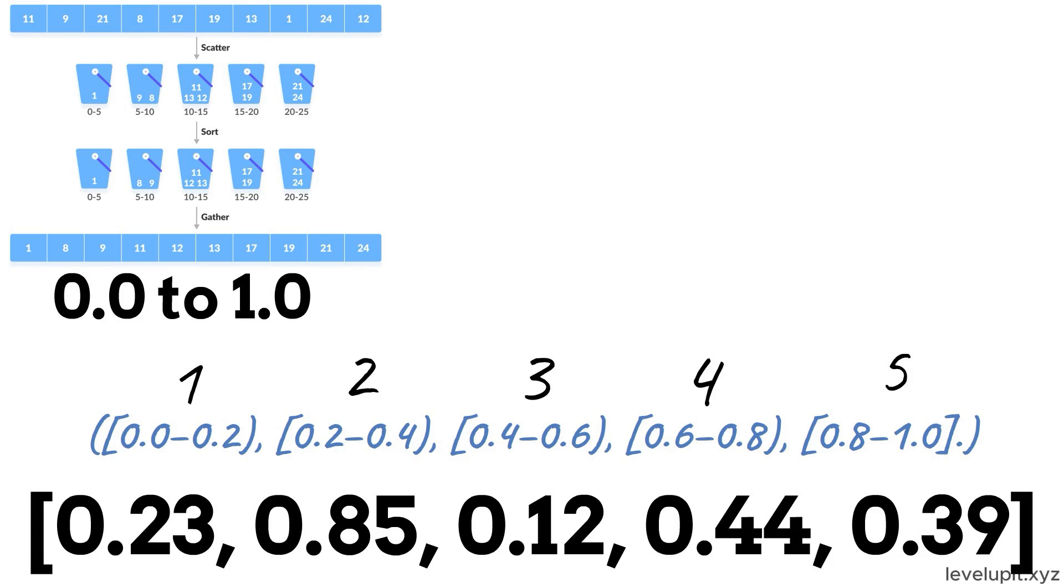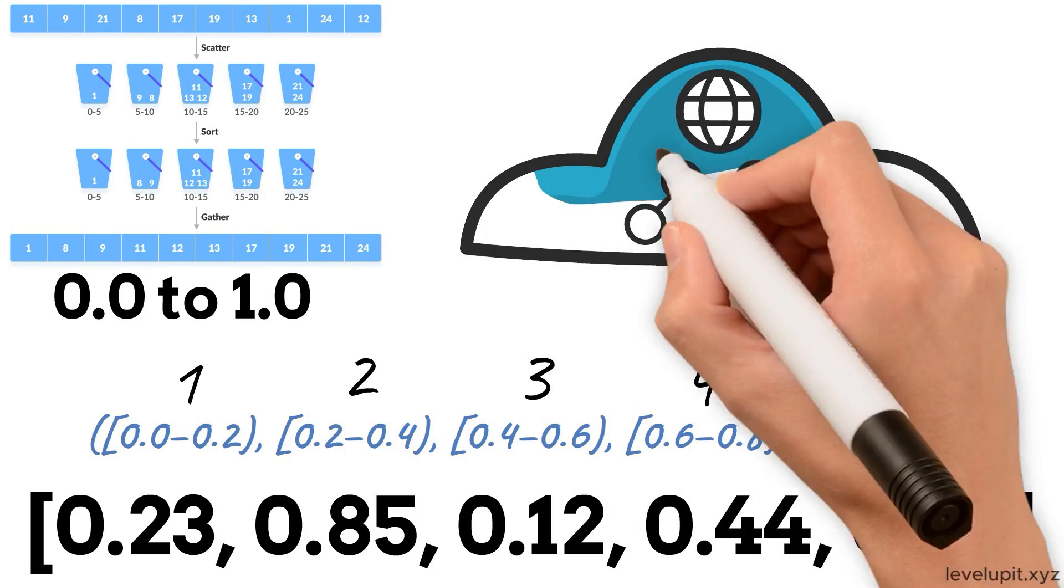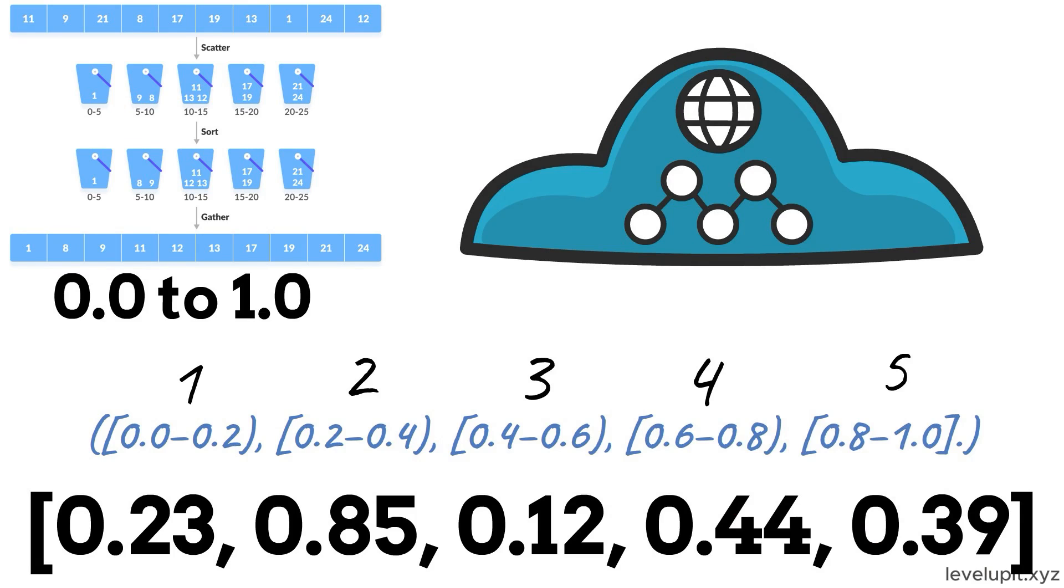Sort each small bucket—insertion sort is fine—and then concatenate buckets in order to get a sorted list. If data clusters badly, performance drops, but with a nice spread, it is elegant and fast.